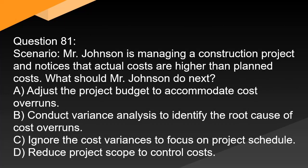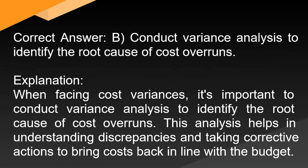Question 81: Mr. Johnson is managing a construction project and notices that actual costs are higher than planned costs. What should Mr. Johnson do next? A. Adjust the project budget to accommodate cost overruns. B. Conduct variance analysis to identify the root cause of cost overruns. C. Ignore the cost variances to focus on project schedule. D. Reduce project scope to control costs. Correct answer: B. Conduct variance analysis to identify the root cause of cost overruns. Explanation: When facing cost variances, it's important to conduct variance analysis to identify the root cause. This analysis helps understand discrepancies and take corrective actions to bring costs back in line with the budget.